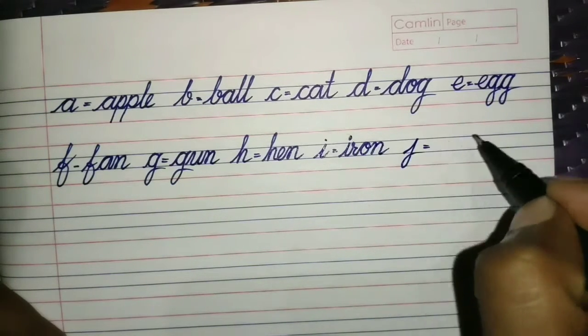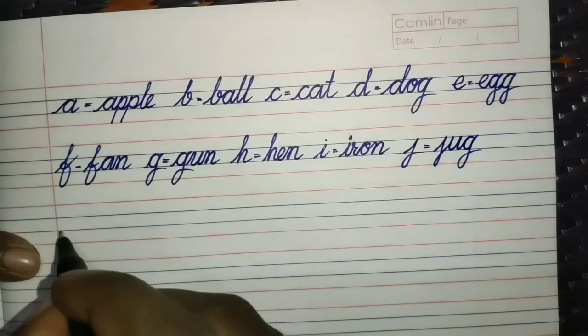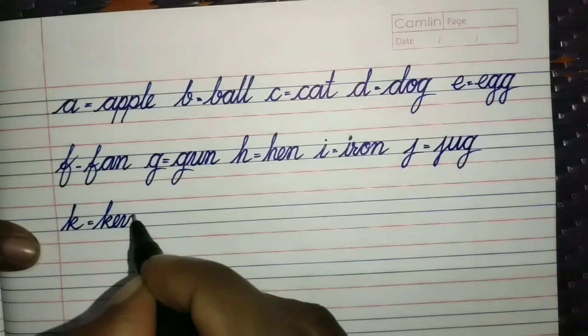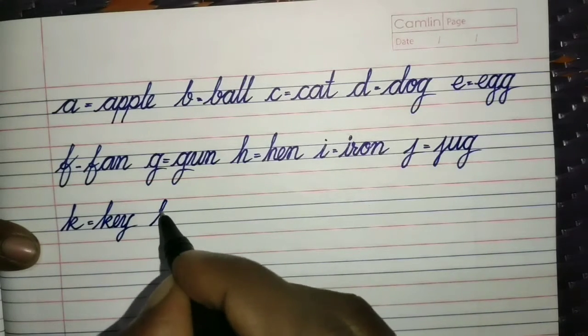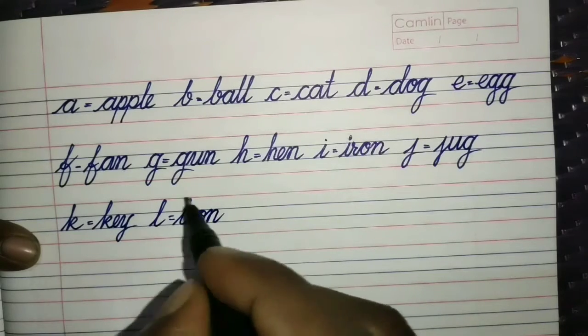J for Jug. J, U, G. Jug. K for Key. K, E, Y. Key. L for Lion. L, I, O, N. Lion.